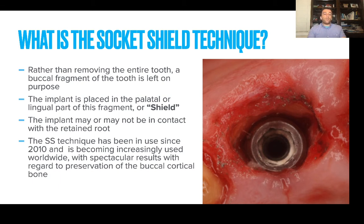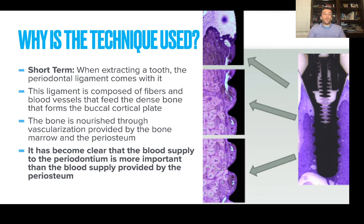It's become wider and wider in use with spectacular results from clinicians throughout the world. In the short term, we know that when we extract the tooth, the PDL comes with it. This ligament is composed of fibers and blood vessels that feed into the dense bone forming the buccal cortical plate. The bone is naturally nourished through vascularization provided by the bone marrow and the periosteum. It's become very clear that the blood supply to the periodontium is more important than the blood supply provided by the periosteum.